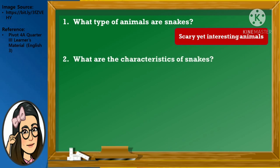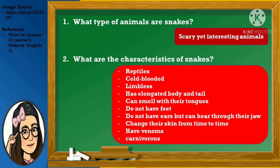Snakes are reptiles, cold-blooded, limbless, have an elongated body and tail, can smell with their tongues, do not have feet, do not have ears but can hear through their jaw, change their skin from time to time, have venoms, and are carnivorous.